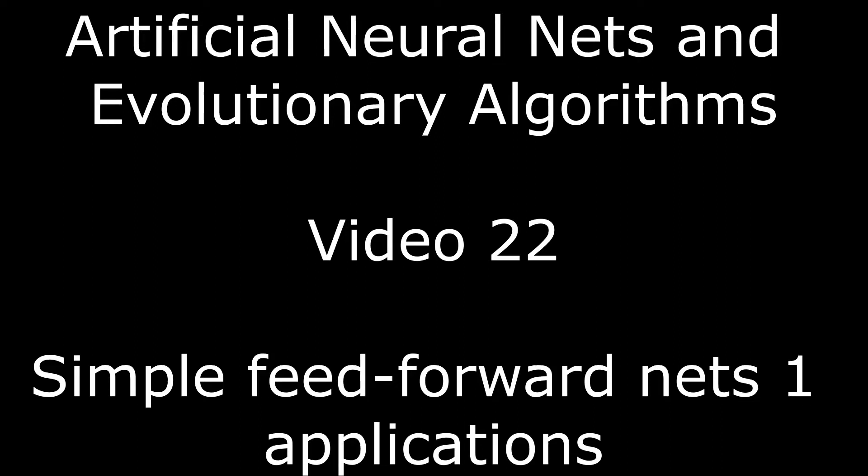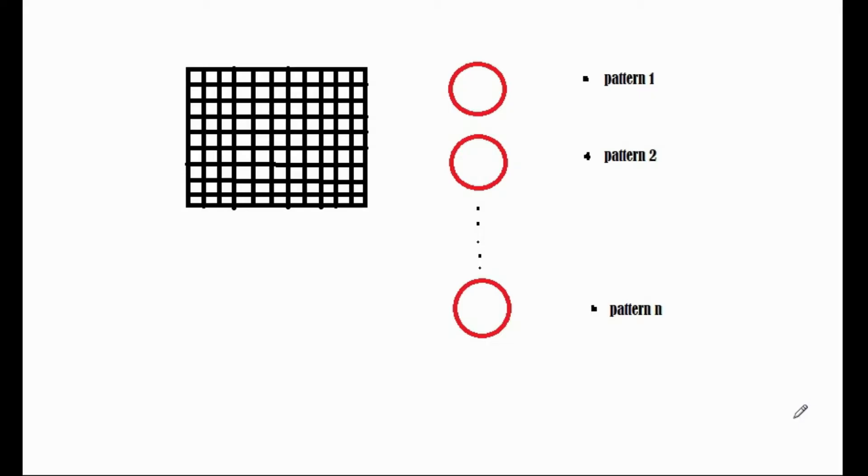Up until now, we've discussed mainly the pattern recognition applications of ANNs. In particular, we've looked at images as shown in the diagram on the screen, with each pixel assigned to a separate input and each output to a separate pattern.